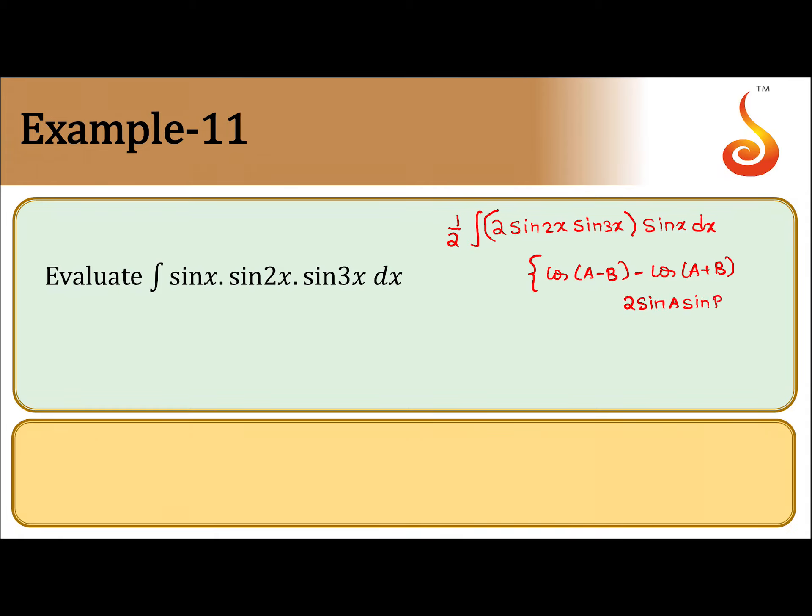1/2 times integral, this can be written as cos x minus cos 5x times sin x dx. Again we multiply by 2 and divide by 2: 1/4 integral sin x cos x times 2 minus 2 cos 5x sin x.